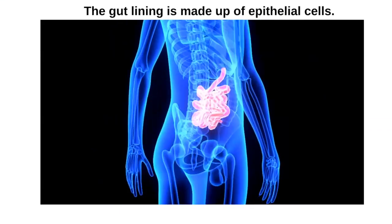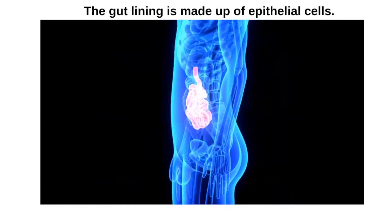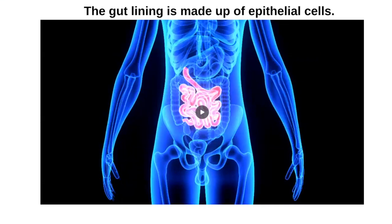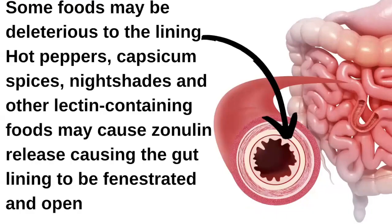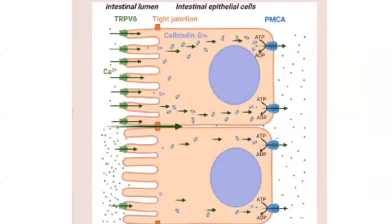The gut lining is made up of epithelial cells - that's just the term for cells that line the insides. Imagine the gut lining as a tube: your body is a big tube and the food in it, from your mouth to the other end, isn't part of you until it gets into your bloodstream. Some foods are particularly damaging to that lining - hot peppers, capsaicin, spices, nightshades, and basically anything with lectins. These cause the release of something called zonulin, which causes the gut lining to become fenestrated and open - that's leaky gut.